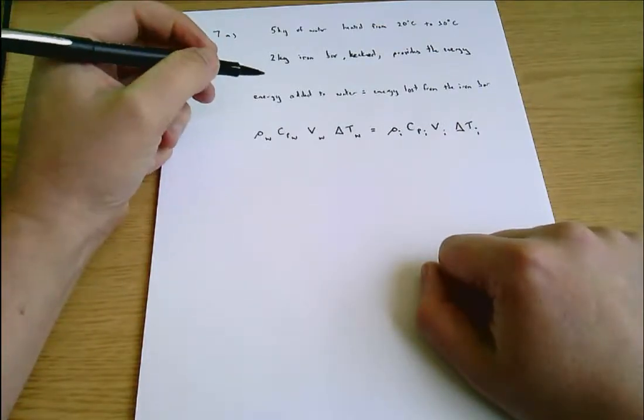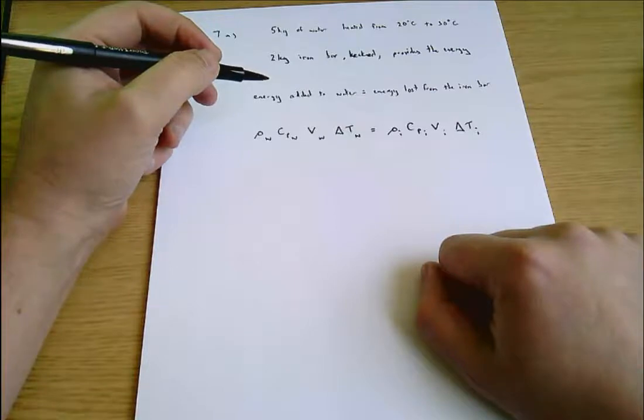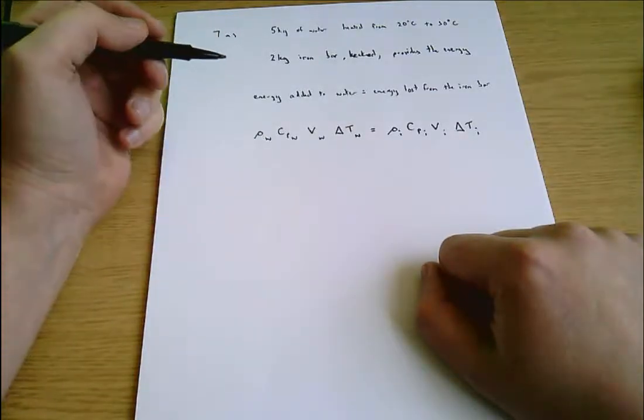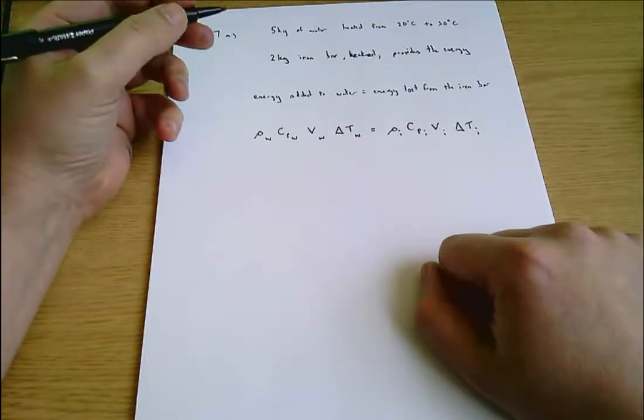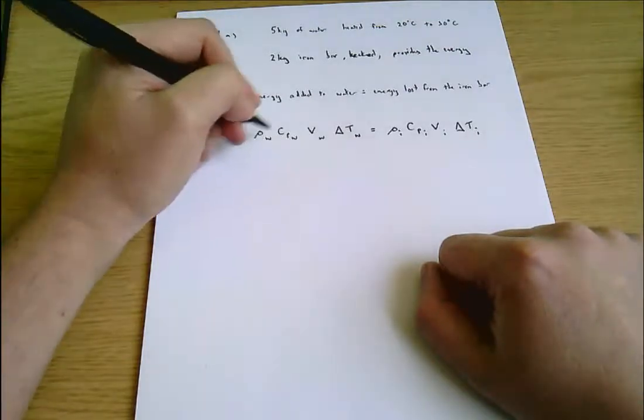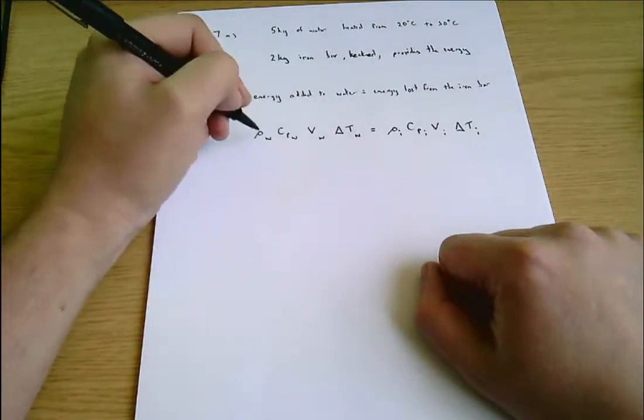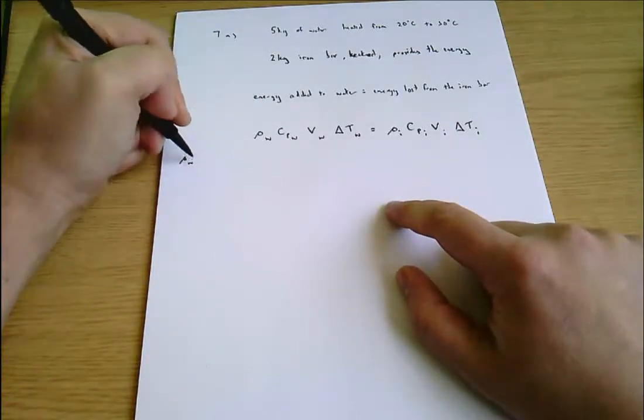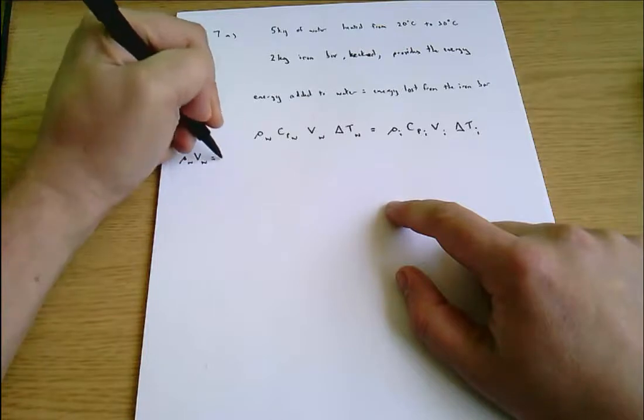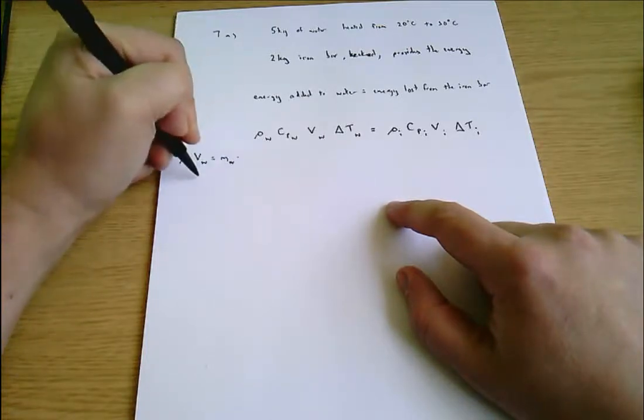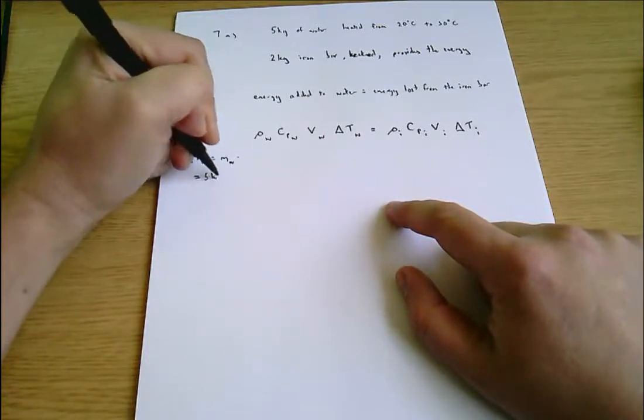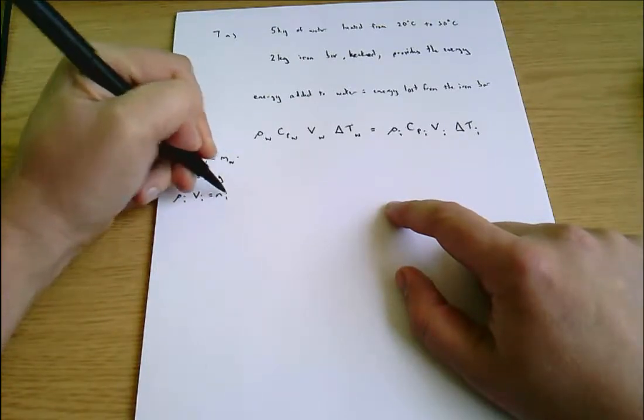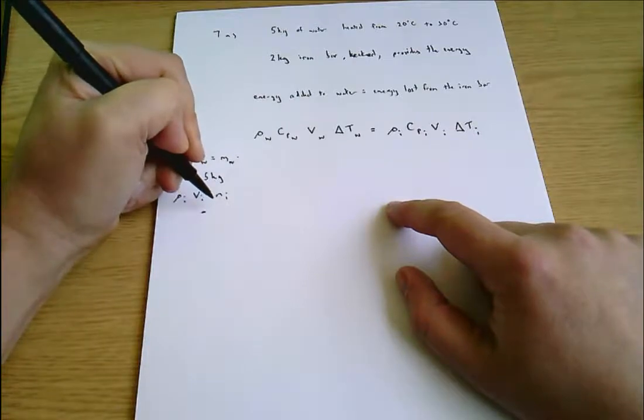Let's see what we know. There's a hint that density is mass divided by volume, so mass equals rho V. I can lump these together: rho water times V water equals mass of water, which equals five kilograms. Similarly, rho iron times V iron equals mass of iron, which equals two kilograms.